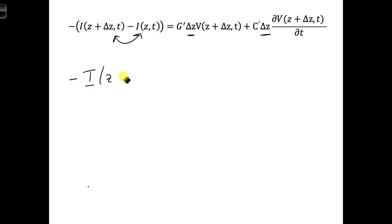Minus I of z plus delta z, t. Sorry, sometimes I tend to put a line through my Zs. Minus... And I'm noticing I need a parenthesis around this entire thing.